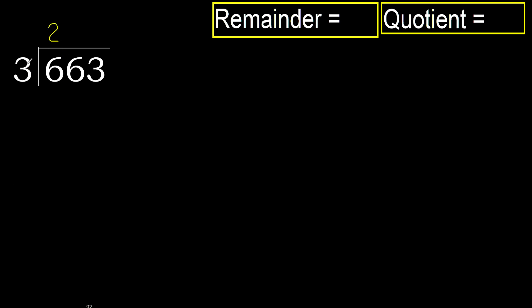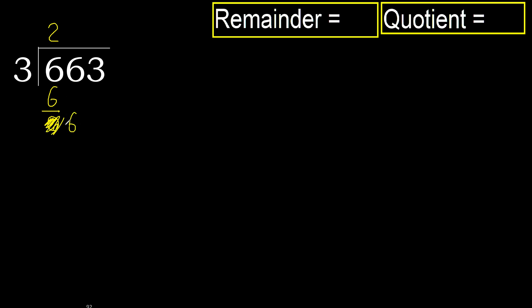Multiply by 2: 6 is not greater. Subtract: 6 minus 6 equals 0. Next, bring down and eliminate the 0 here.